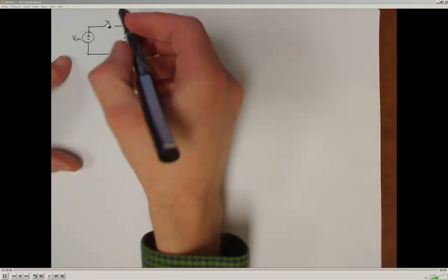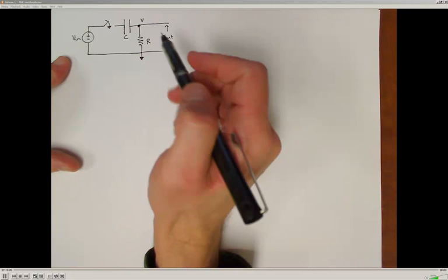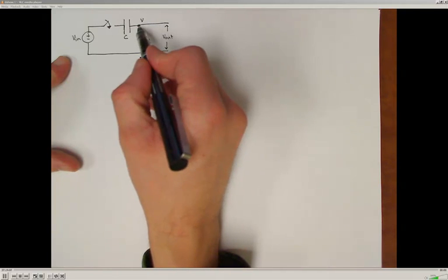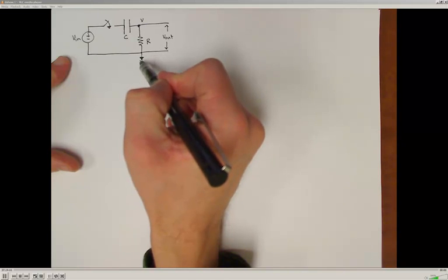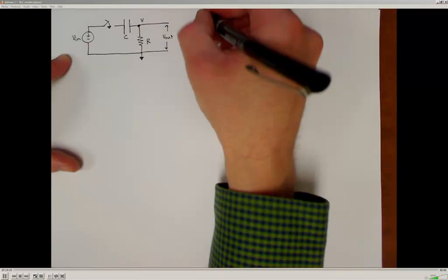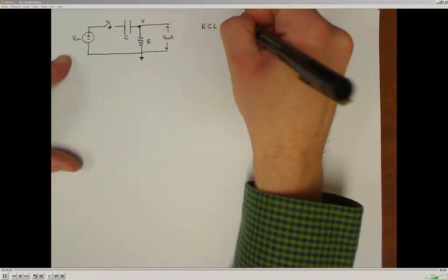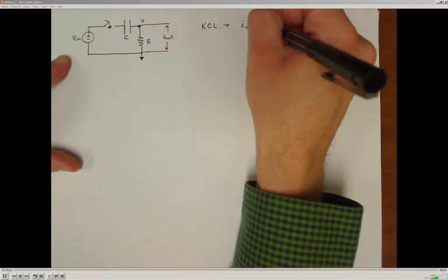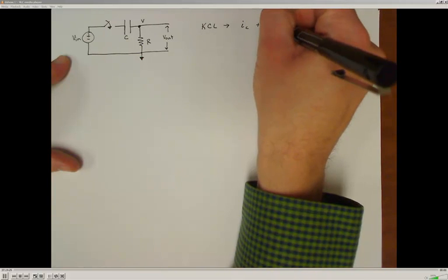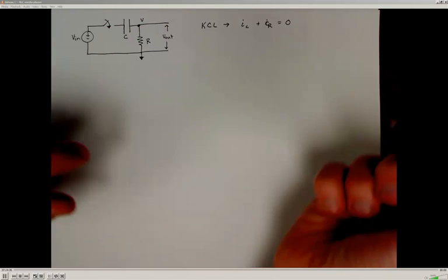To do this, I'm going to perform a node balance. I'm going to look at the current balance out of this node, which I'm going to call V — or V out — with respect to this reference node right here. Using Kirchhoff's current law, we know that the current through the capacitor plus the current through the resistor has to sum to zero. I'm going to use the current and voltage relationships for the capacitor and the resistor to solve for the voltage.